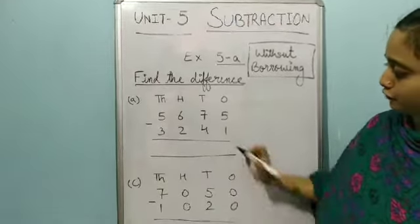So next one. Ones place, tens place, hundreds and thousands. So 0 minus 0 — you don't have any number, you have to minus 0, so it will be 0. Now 5 minus 2, it will be 3. Again 0 minus 0 will be 0. Then 7 minus 1, it will be 6.